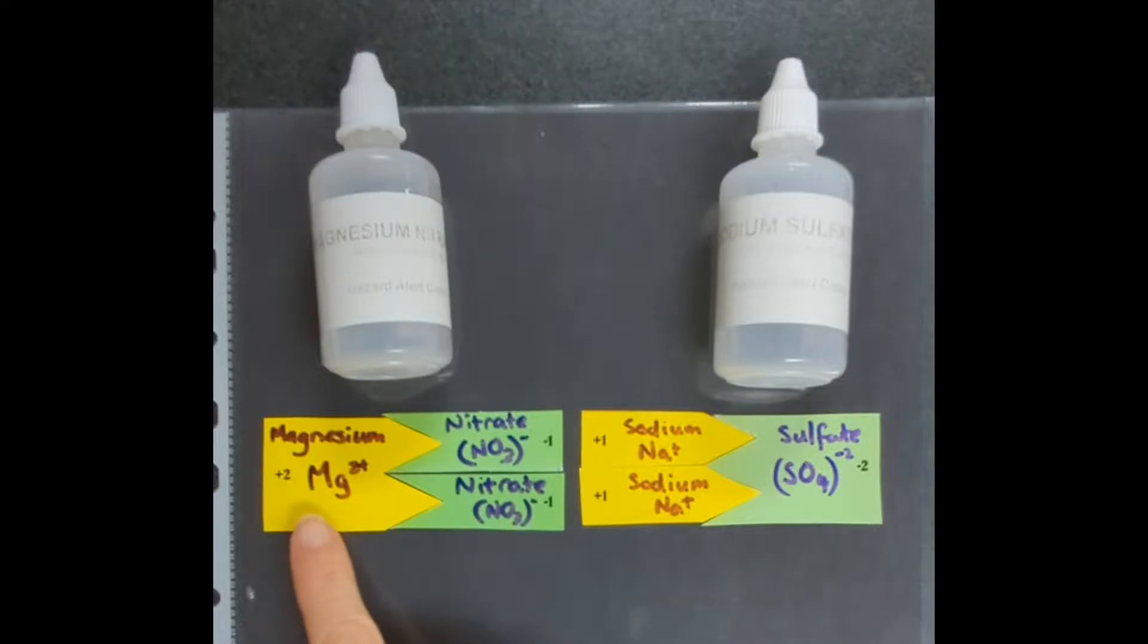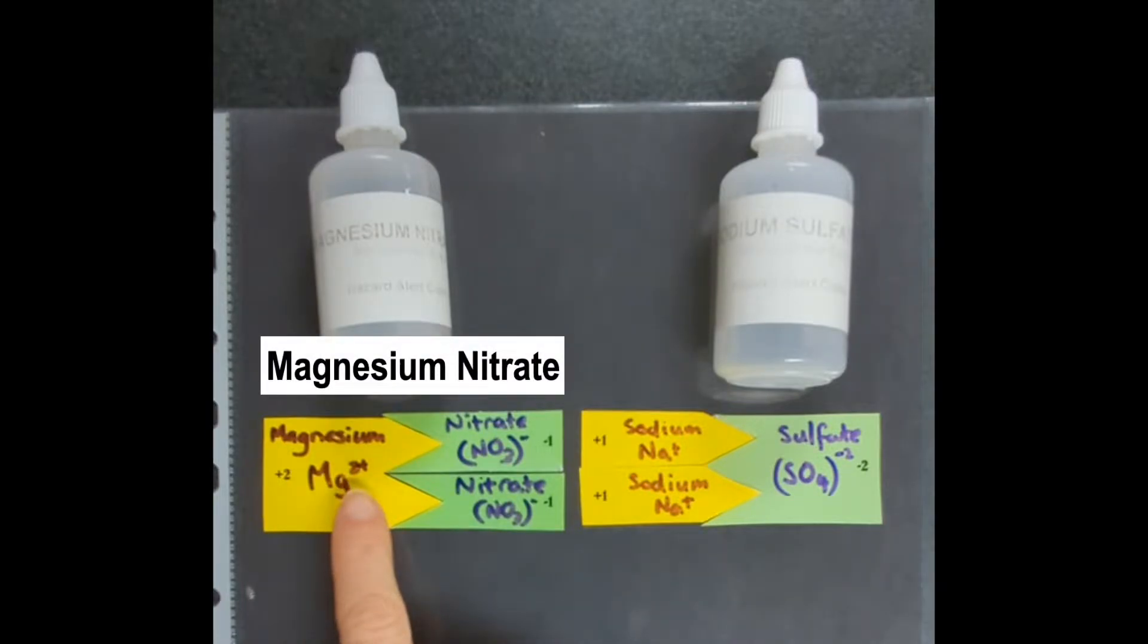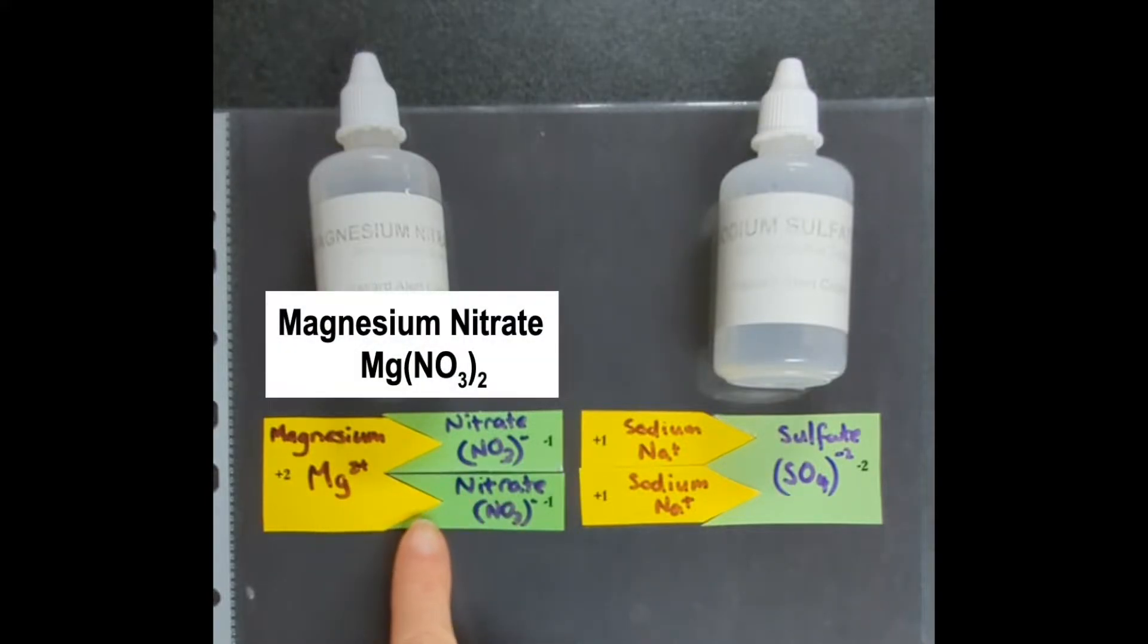Magnesium nitrate: magnesium has two positives with it, nitrate has one negative. So you actually need two nitrates to fill in the magnesium's two positives there and cancel out the charge. That's what magnesium nitrate looks like as a compound - magnesium and two nitrates joined together with bonds.